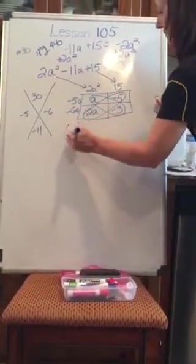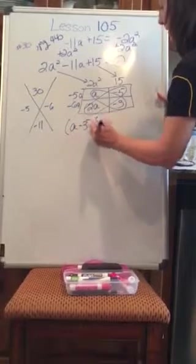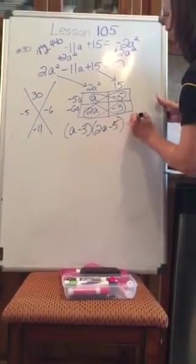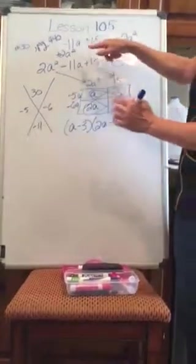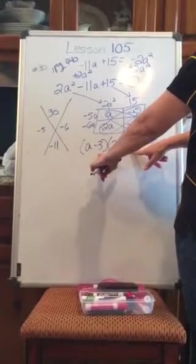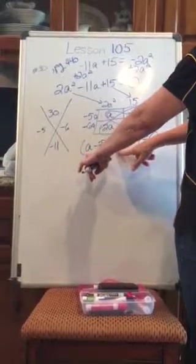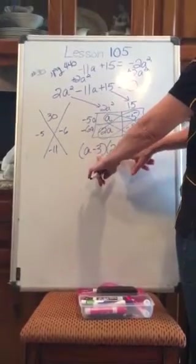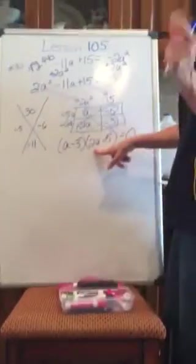Here's my factors. I have a minus 3 times 2a minus 5, equal to 0. I'll check, make sure I get negative 11a is my middle term. I do get 2a squared. I do get positive 15. All right, so that would be my extremes is negative 5a minus 6a. I do get negative 11. So let's check.